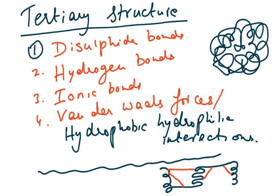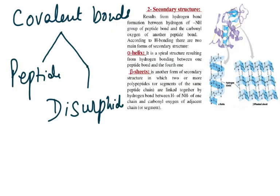For example, if one amino acid has sulfur and another further along the chain also has sulfur, they form a disulfide bond, causing that region to fold in a specific manner. This contributes to the tertiary structure.